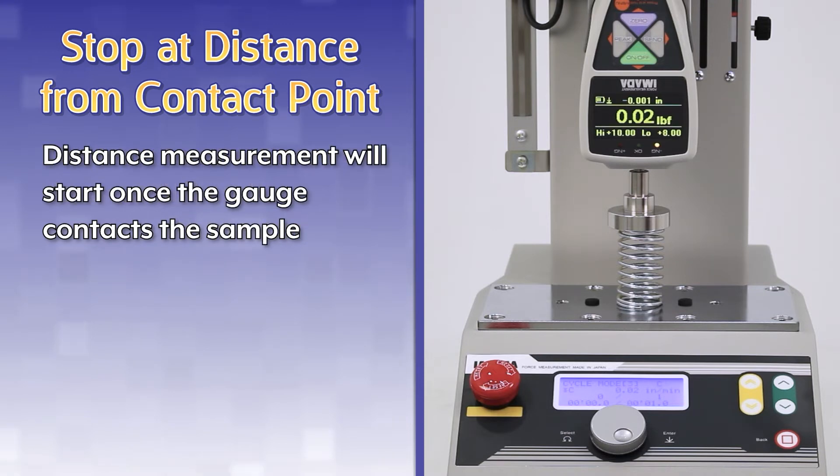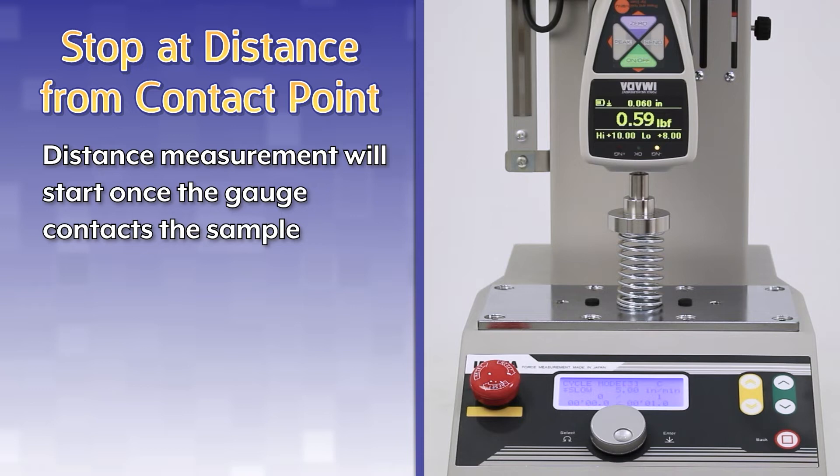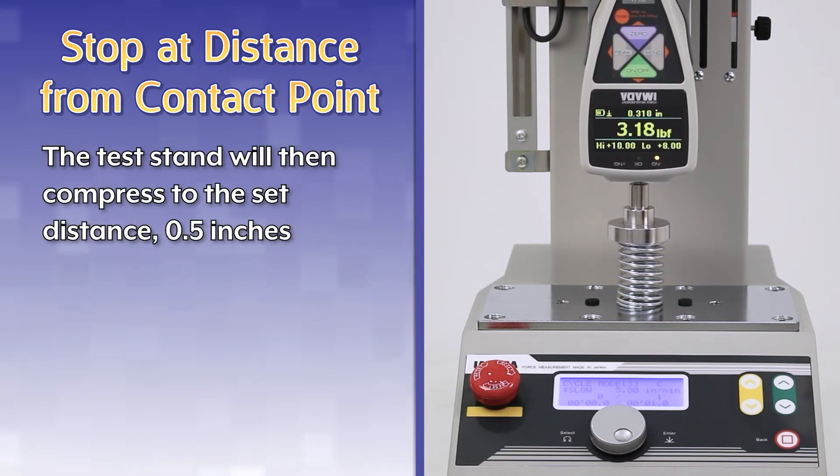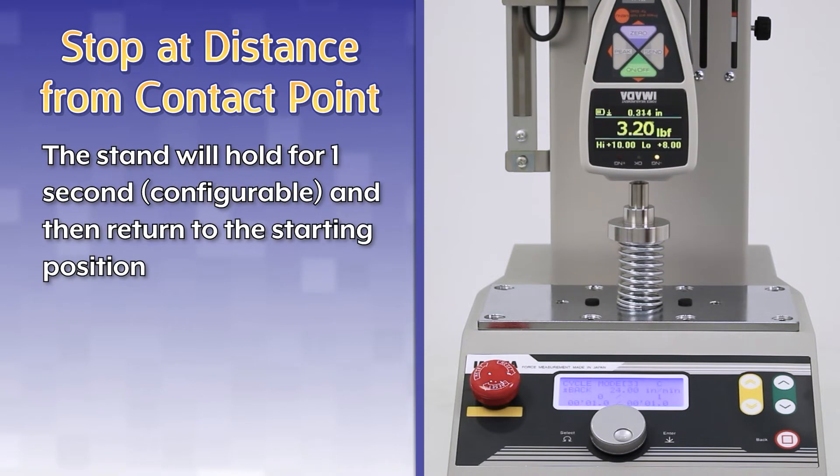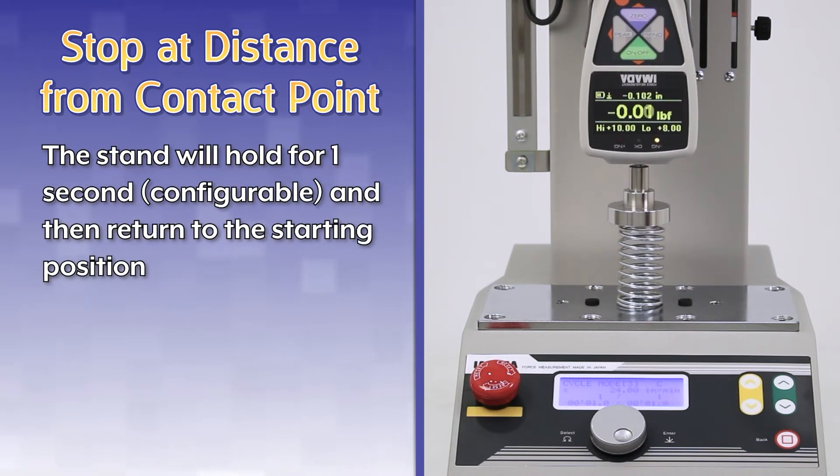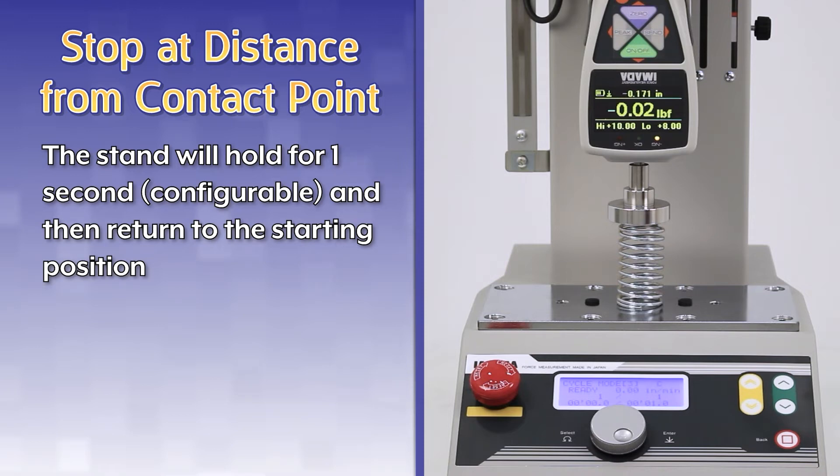Distance measurement will start once the gauge contacts the sample. The test stand will compress to the set distance point five inches, configurable. The stand will hold for one second, configurable, and then return to the starting position.